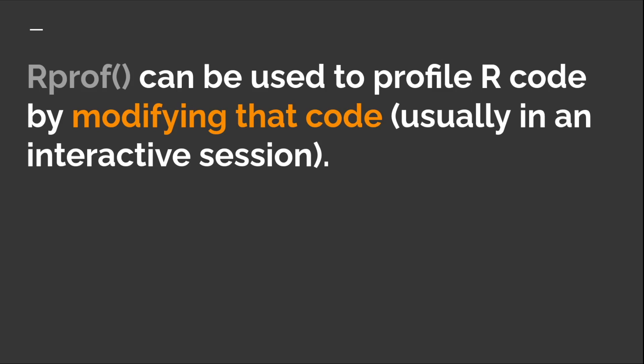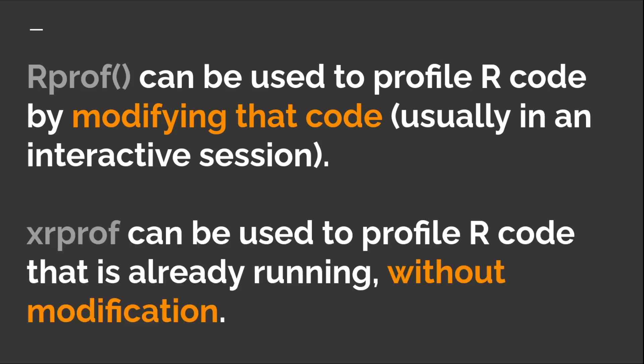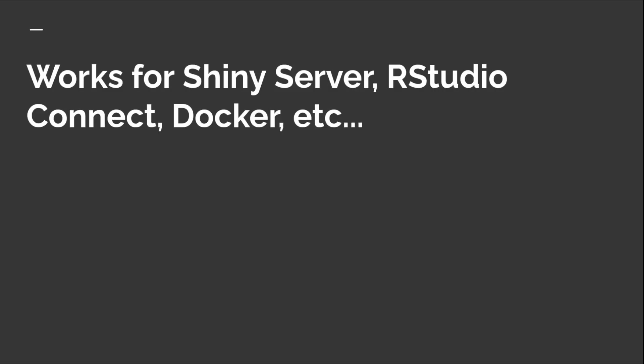This disconnect between where code is really running and where you want to profile it is the fundamental motivation behind a new project called XRProf. XRProf is not a clever name — it just means external Rprof, and it is exactly that. It's a standalone program that allows you to profile R code that is already running. Rprof allows you to profile by modifying your R code, usually locally in an interactive session. XRProf, on the other hand, is designed around profiling R code that is already running without modification — whether on Shiny Server, RStudio Connect, or under Docker.